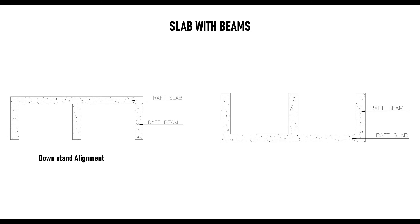The second orientation is the upstand alignment, where the bottom of the raft slab is in alignment with the bottom of the beam — the beam is raised up to receive the column. The downstand alignment is more economical to construct than the upstand alignment. In the upstand case, you need to provide an oversized concrete for the ground slab because the raft slab is placed deep down to the foundation depth. In the downstand case, the raft slab serves two purposes: acting as the foundation and also as the ground floor concrete for the building.